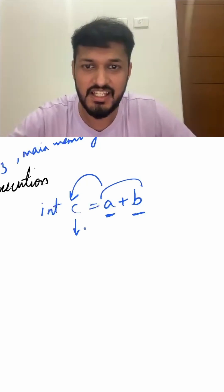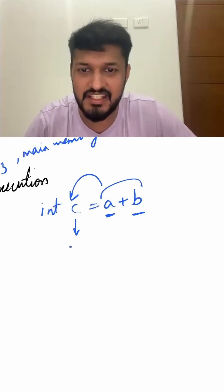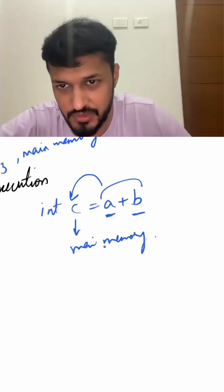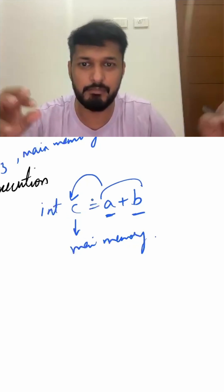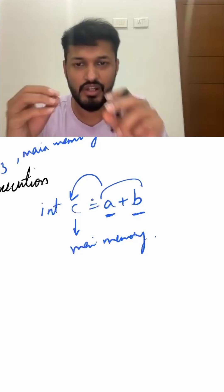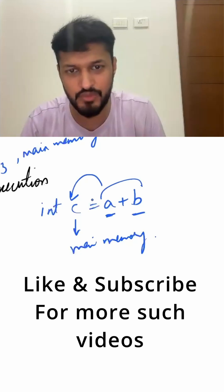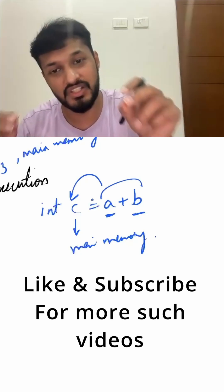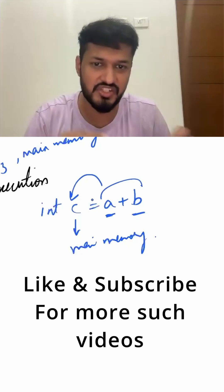Registers are used because the CPU can't compute on anything else. Whenever instruction execution happens, all the variables which are associated with that particular instruction are brought into registers first, and then the operation happens.